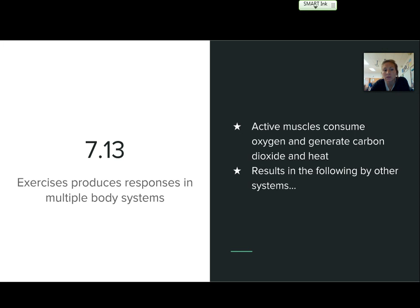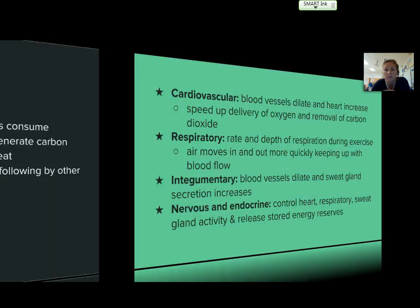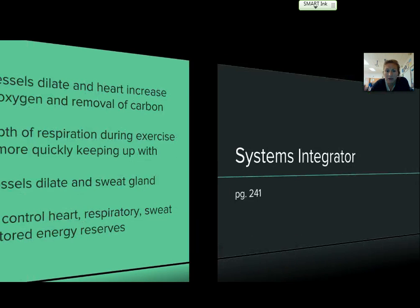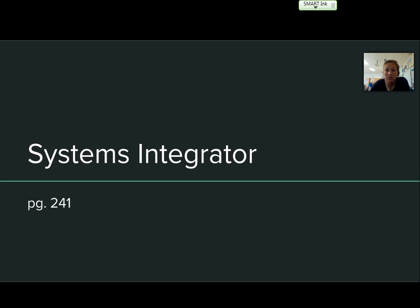Finally, 7-13 covers how exercises produce responses in multiple body systems. Active muscles consume oxygen and generate carbon dioxide and heat, which affects other systems. Your cardiovascular, respiratory, integumentary, and nervous and endocrine systems all play a part when you're active. Go ahead and look these four over. My last slide also points out that the systems integrator talks about how one system affects the other — for this chapter, it's on page 241.